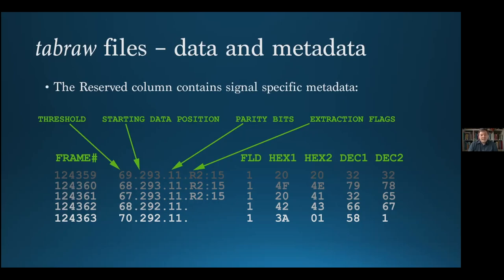While the first two pieces of metadata, which describe the data extractor's solution, open considerable possibilities, it's the parity bits that immediately allow us to improve upon existing caption data solutions. Knowing whether or not the data passed the parity check allows one to implement the error detection and correction functions of a hardware caption decoder, and all that that capability brings with it.